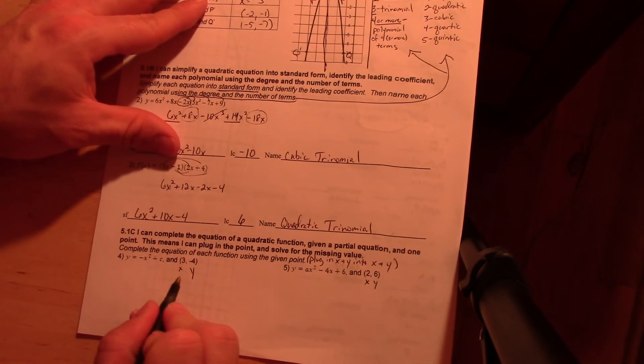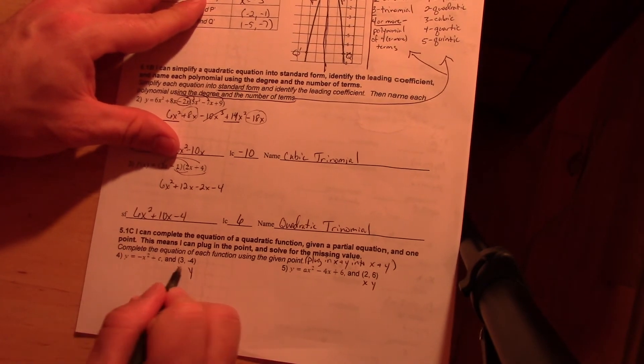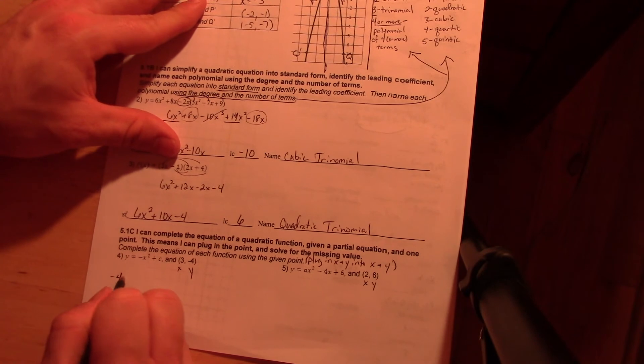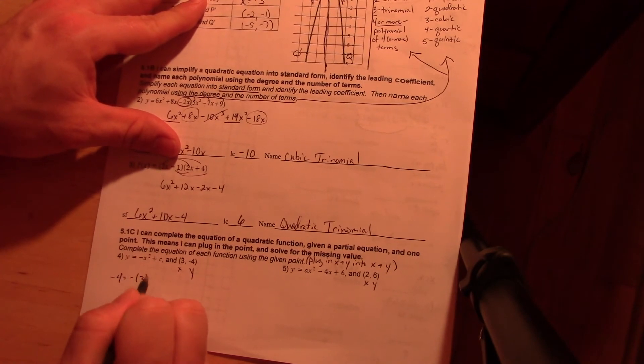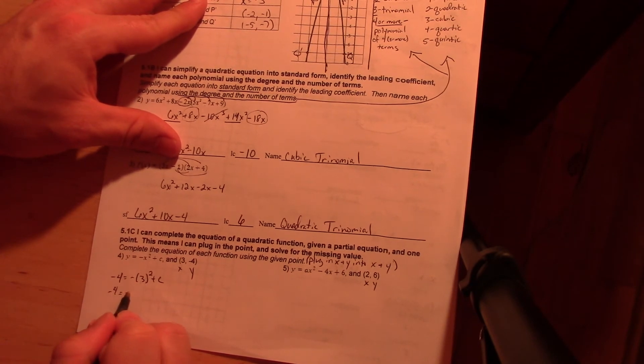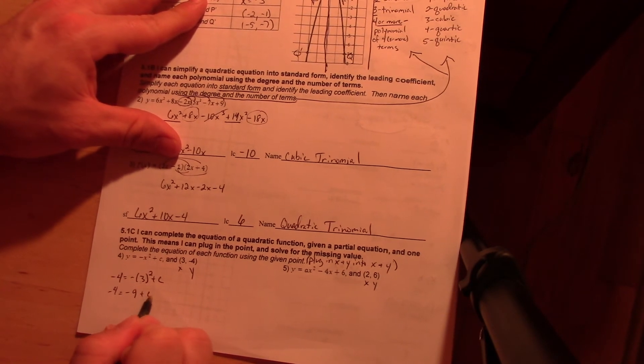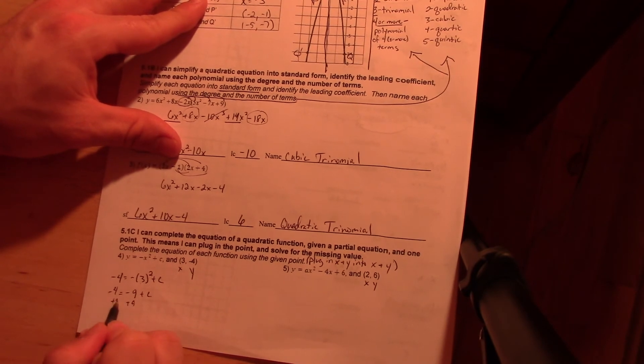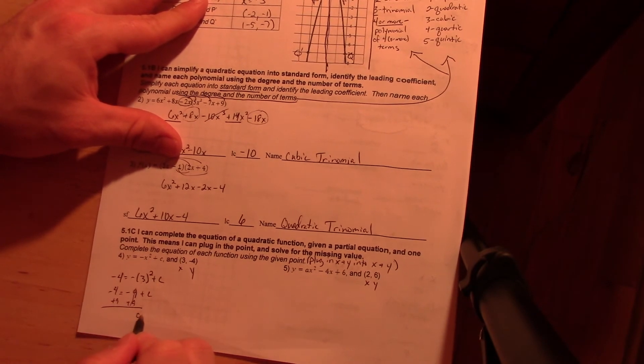Onto the bottom here. I'm going to plug into x into x and y into y. So I've got negative four equals negative three squared plus c. Again, I have to do what's inside here first. So I've got negative four equals negative nine plus c. And just do the opposite to solve for it. I get c to be five.